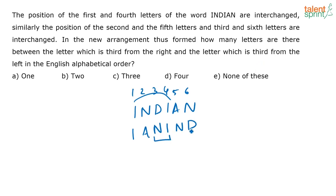You are looking at the third letter from the right and the third letter from the left. So you have N and I. How many letters are there between N and I in the English alphabet? You have J, K, L, M. So you have four letters. The correct answer is option D.